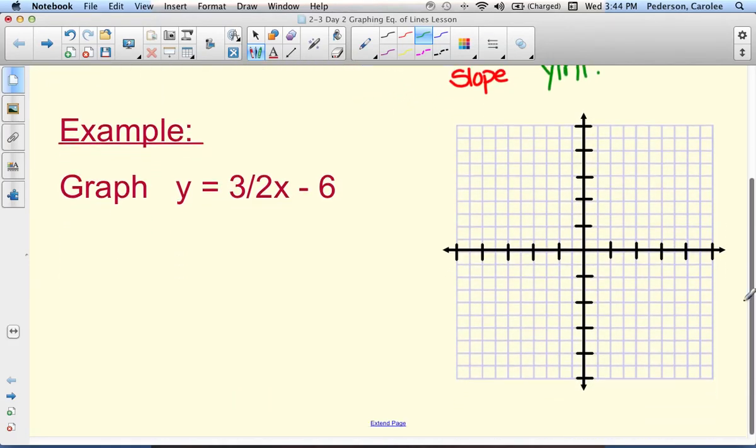So let's go down to this example. Let's identify the slope first. The slope is 3 over 2. So we're going to rise 3 in a positive direction and run 2 in a positive direction.